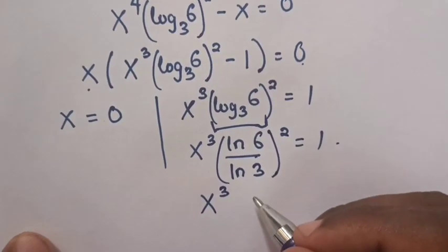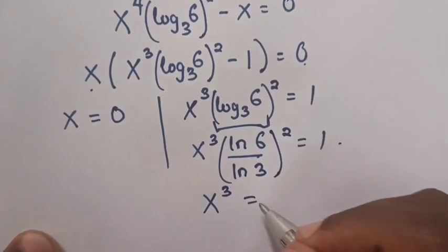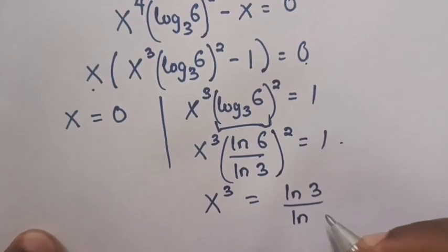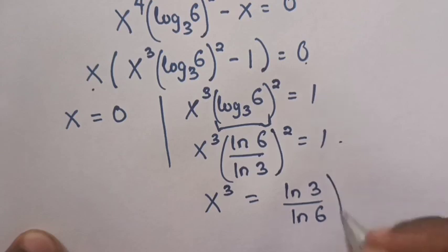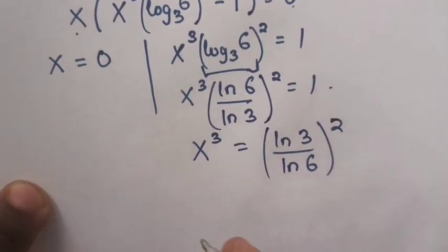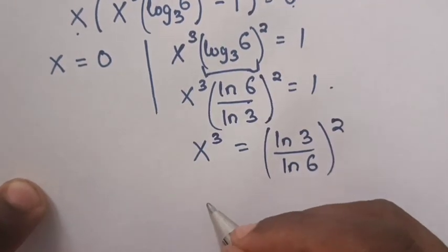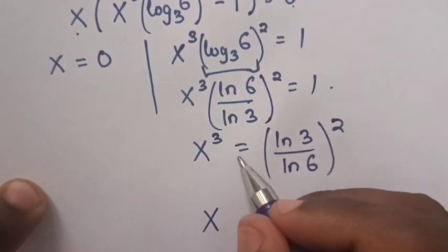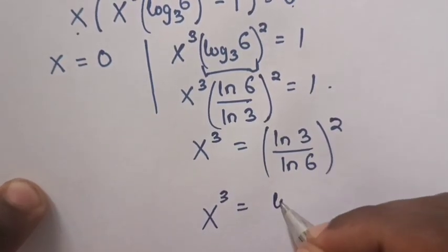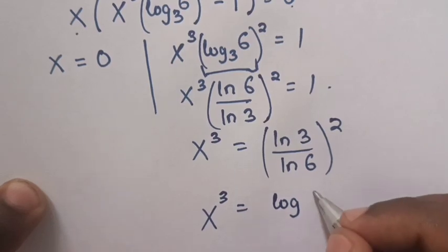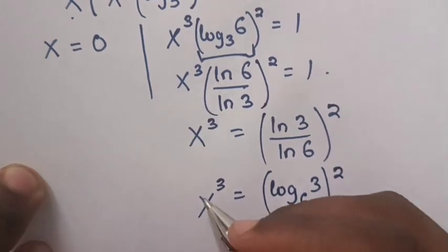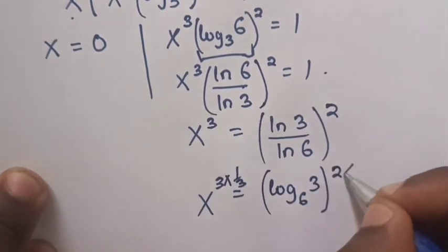The inverse gives ln 3 over ln 6, remember the square. Then to find the value of x, we multiply by the power of 1 over 3 on both sides. And ln 3 over ln 6 will be log 3 base 6 bracket squared.